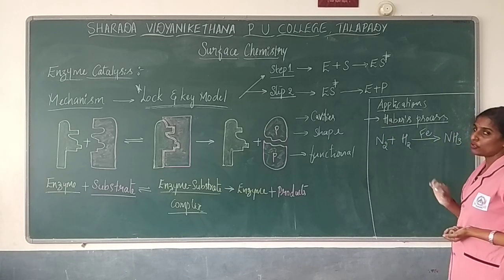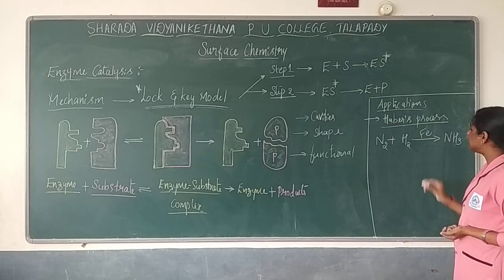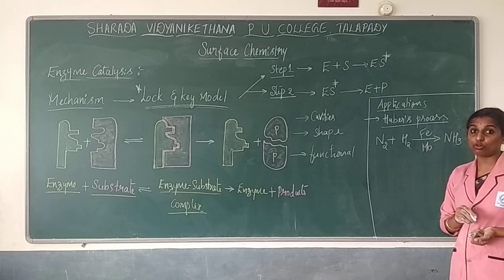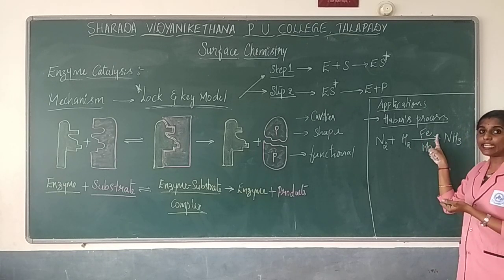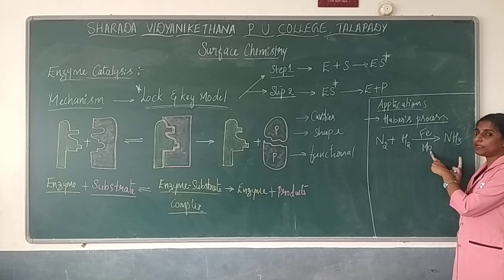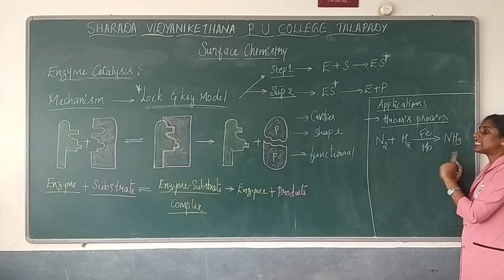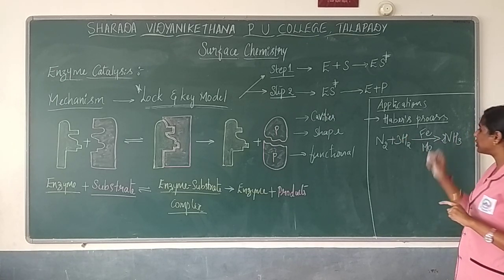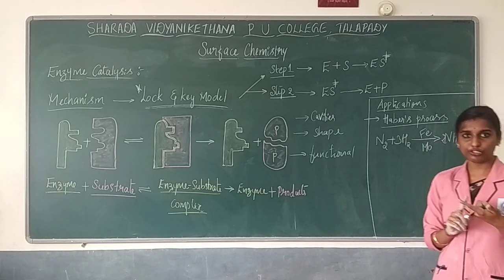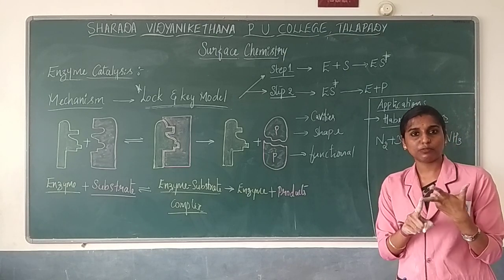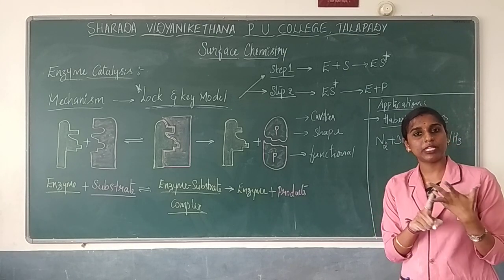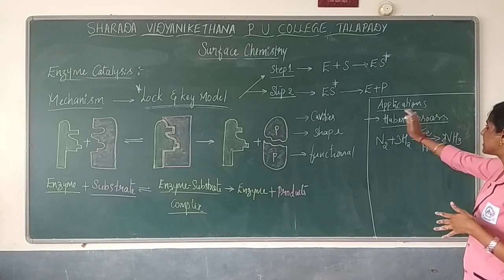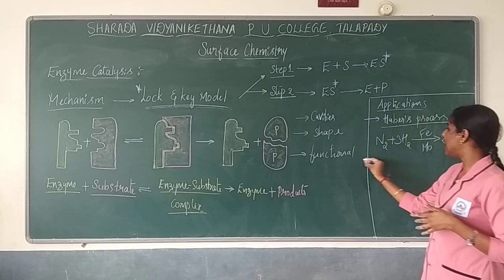Here iron will be used as a catalyst and molybdenum will be used as a promoter. Iron is the catalyst, molybdenum is the promoter. In industries, to carry out this reaction they are using iron oxide, potassium oxide, and aluminium oxide as a catalyst also. So this is one application — the Haber's process.